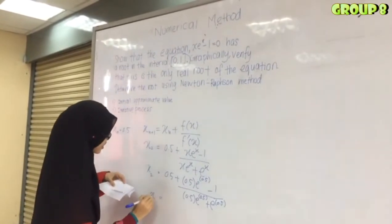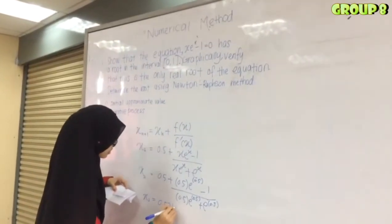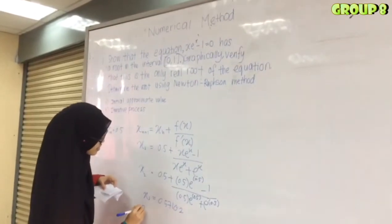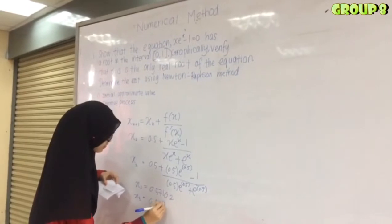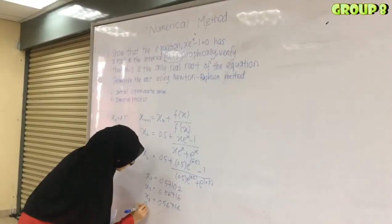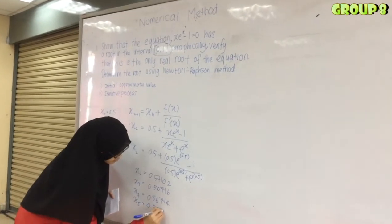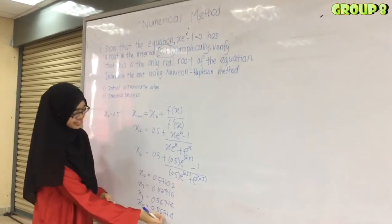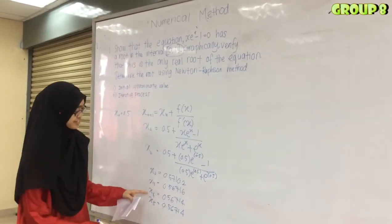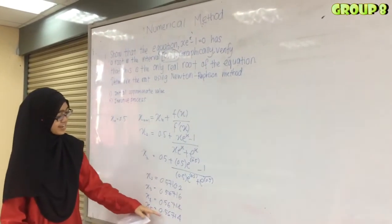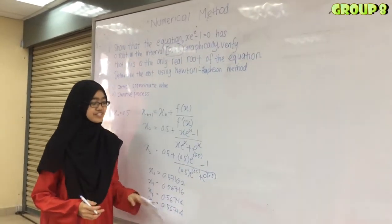We got x₂ = 0.57102, x₃ = 0.56716, and x₅ = 0.56714. Since the last two iterations give the same answer, we take that as the root and choose to either 3 or 4 significant figures.